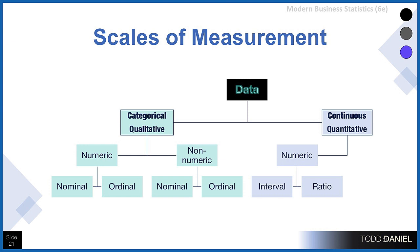On the other side, we have quantitative data. These cannot be non-numeric — we can't compare B divided by Q. It's numbers, and those numbers are going to be either interval or ratio. We will treat them the same and call them scale data.